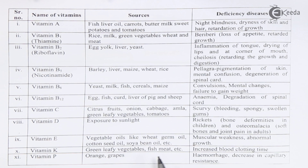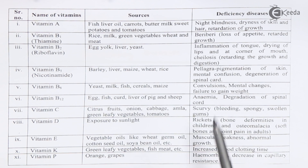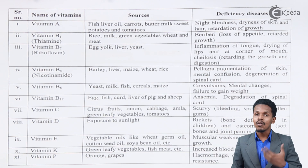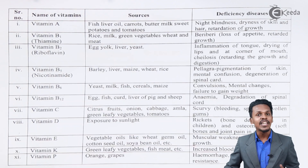Vitamin K is usually present in green vegetables, fish, and meat. Its deficiency can cause increased blood clotting time. Vitamin P is present in oranges and grapes, and its deficiency can cause hemorrhage and decrease in capillary resistance. These are all the deficiency diseases, showing the importance of vitamins in our body.